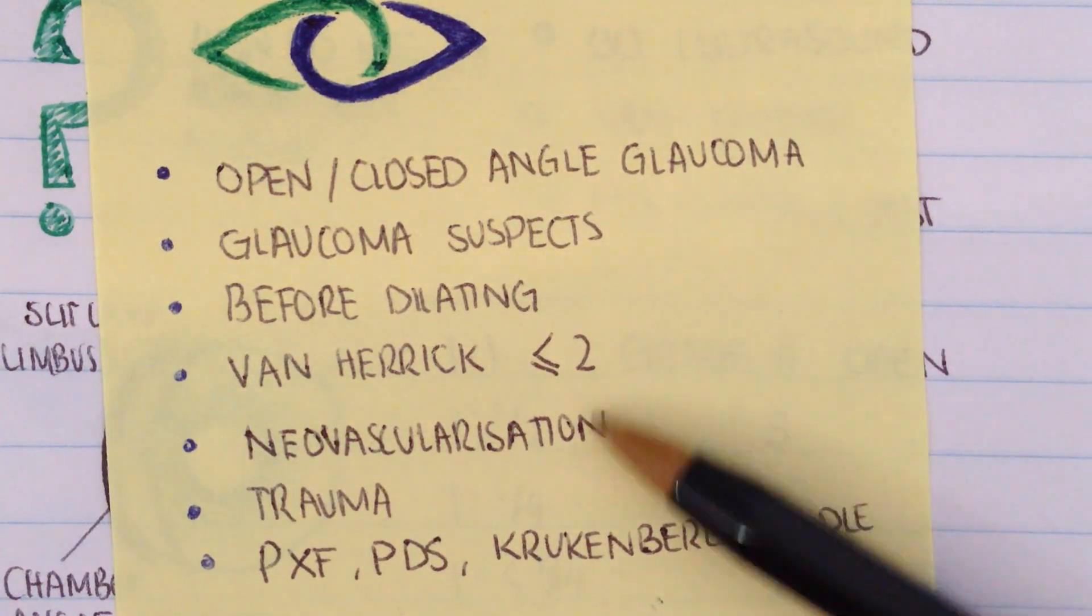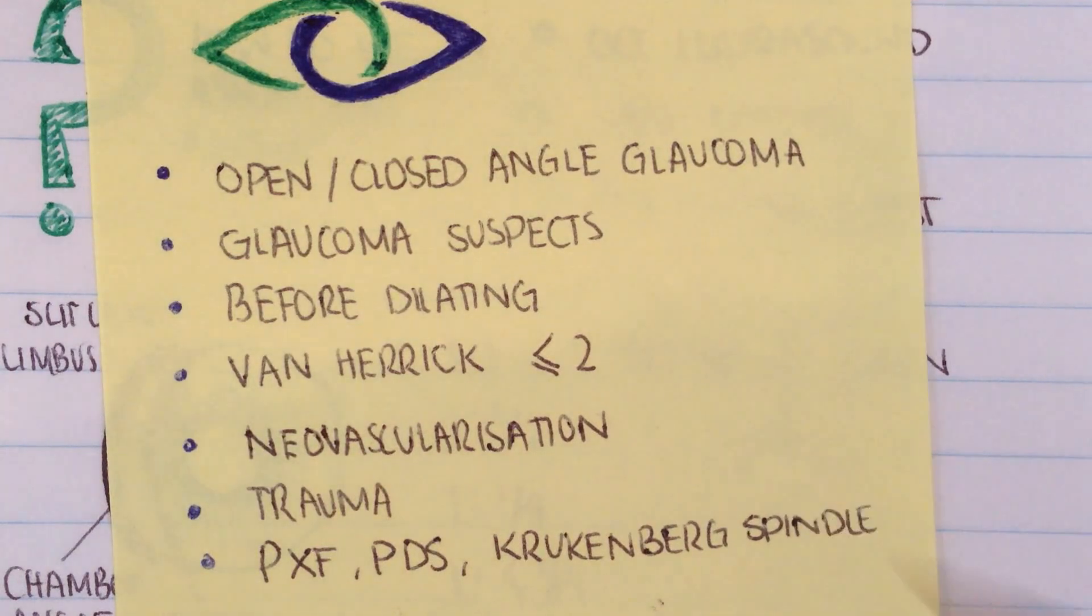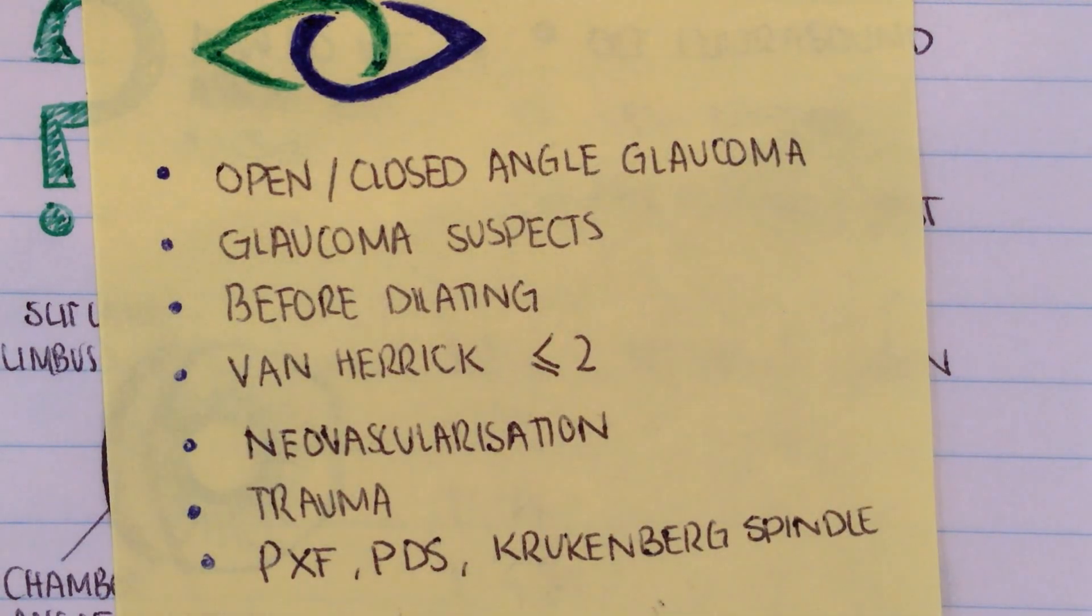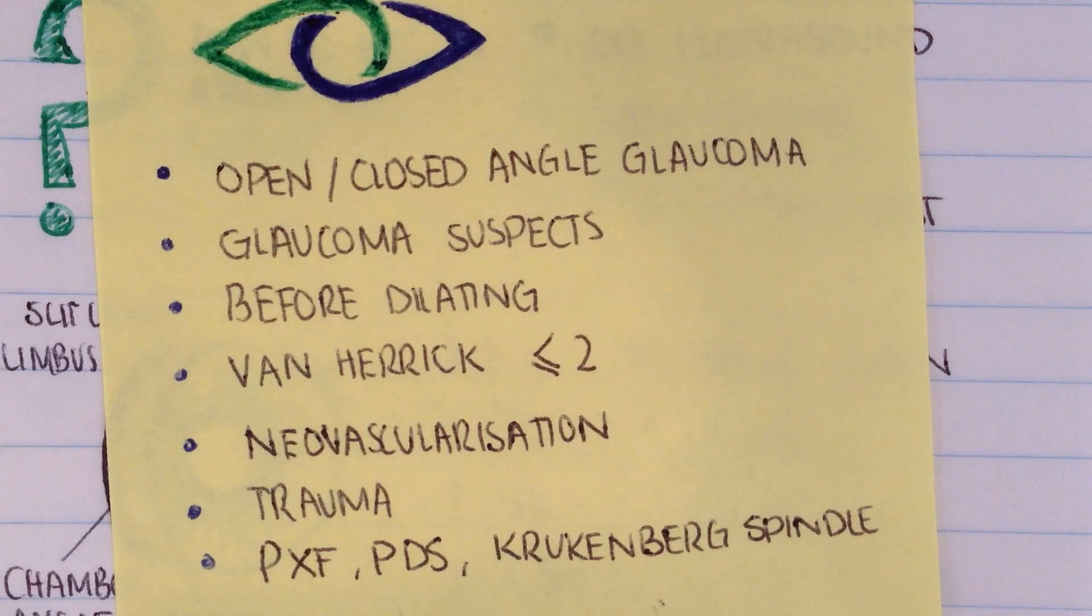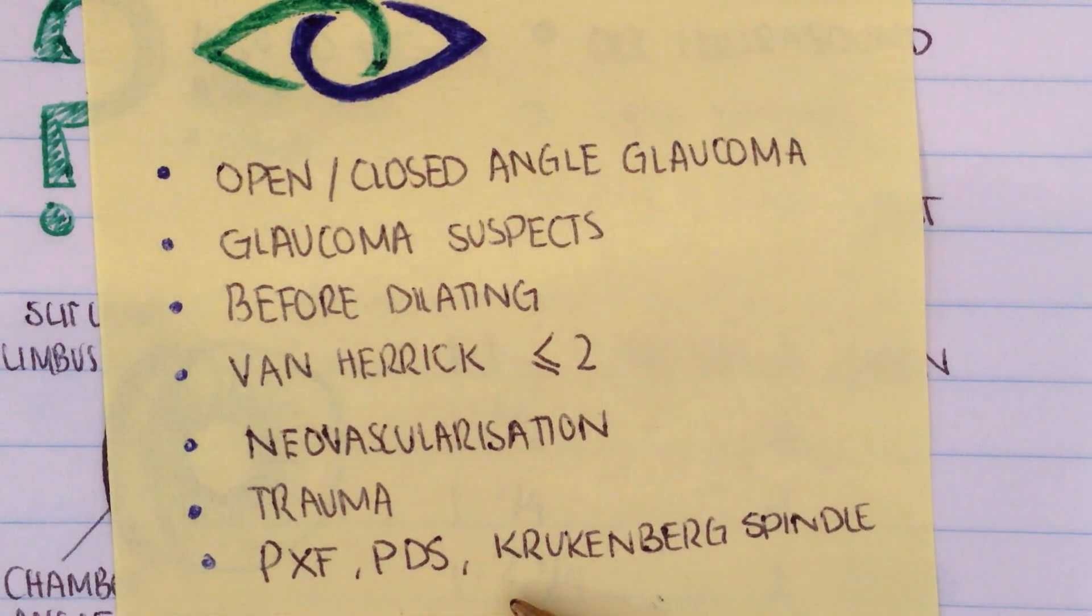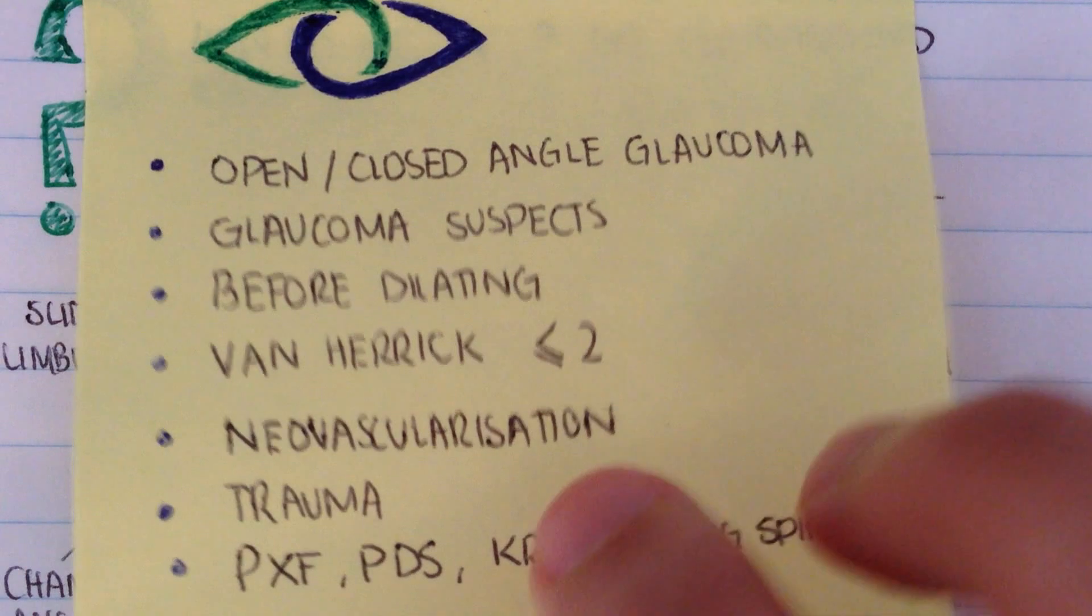If there's any suspicion of neovascularization, for example if a patient just had a central retinal vein occlusion, or they have proliferative diabetic retinopathy, or any retinal ischemic event, if there's any history or evidence of ocular trauma, and cases where we do expect changes to be in the angle, such as pigmentary dispersion syndrome or pseudoexfoliation syndrome.